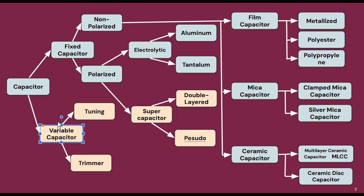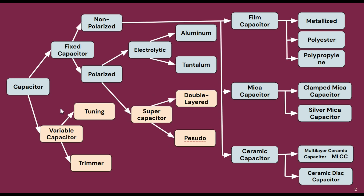Variable capacitors have two more types: tuning and trimmers. Polarized capacitors have electrolytic and supercapacitors. We will not discuss variable capacitors and supercapacitors. We will discuss in detail about polarized electrolytic capacitors and non-polarized capacitors.